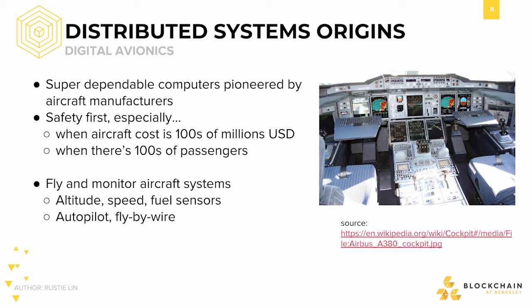Consensus has been studied for ages in fields such as biophysics, ethics, and philosophy, but the formal study of consensus in computer science didn't start until the late 70s and 80s, when people decided that it would be a good idea to put computers on airplanes. The airline industry wanted computers to be able to assist in flying and monitoring aircraft systems. This included monitoring altitude, speed, and fuel.